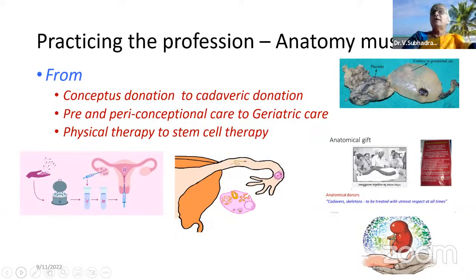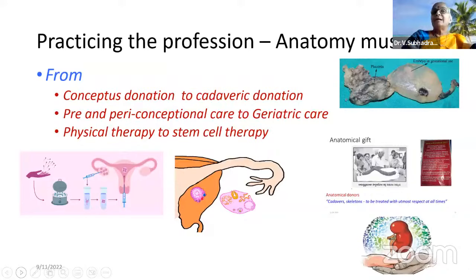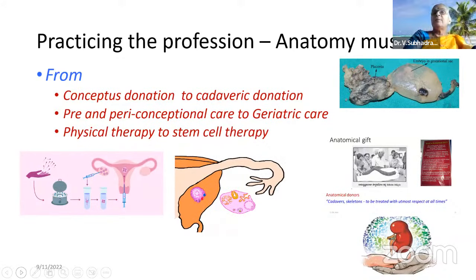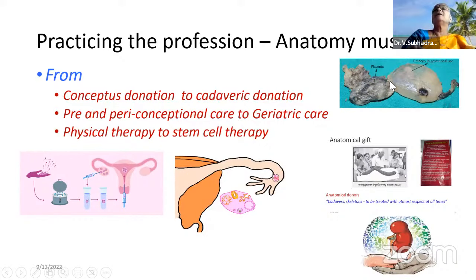For practicing the profession, anatomy is a must. Starting from conceptus donation — the donation of ovum or sperm and its fertilization — to cadaveric donation, extending from pre-conceptional to geriatric care, anatomy is important. Cadaveric organ donation is a developing field requiring basic knowledge of anatomy. From physical therapy to stem cell therapy, you require knowledge of anatomy.